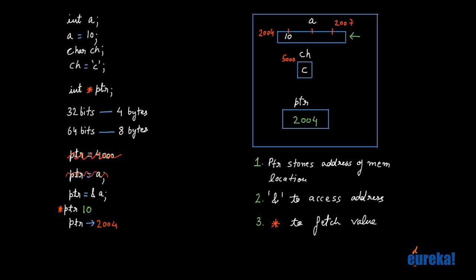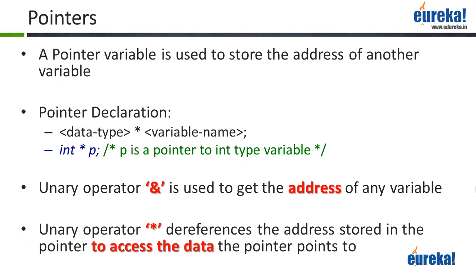The only difference is using pointer variables you can use the star symbol next to a pointer variable and dereference the address. So there's another thing I can do with the star symbol. Let's say I say star ptr equal to 20. What does this mean? Go to the address 2004 and put the value 20 there. So after this point, if I try to print A, it's going to print the value 20. The ampersand unary operator is used to get the address of a particular variable, and the unary operator star dereferences the address stored in the pointer to access the data the pointer points to. Not too complicated — it's simple.